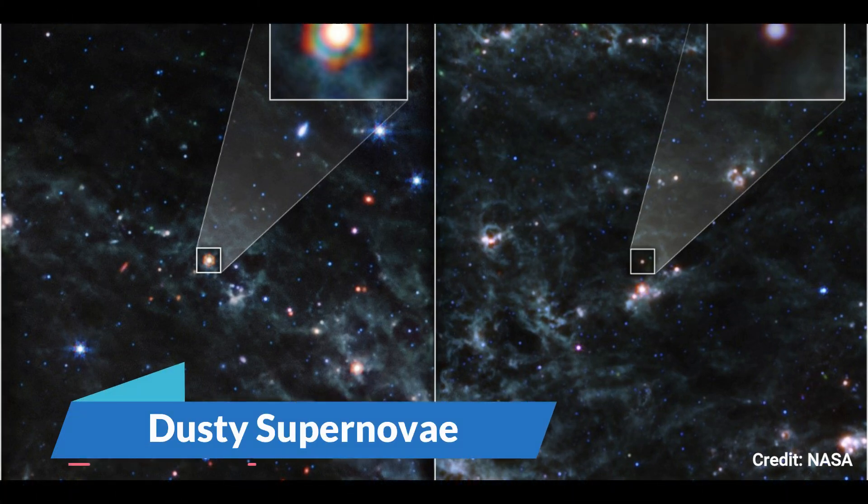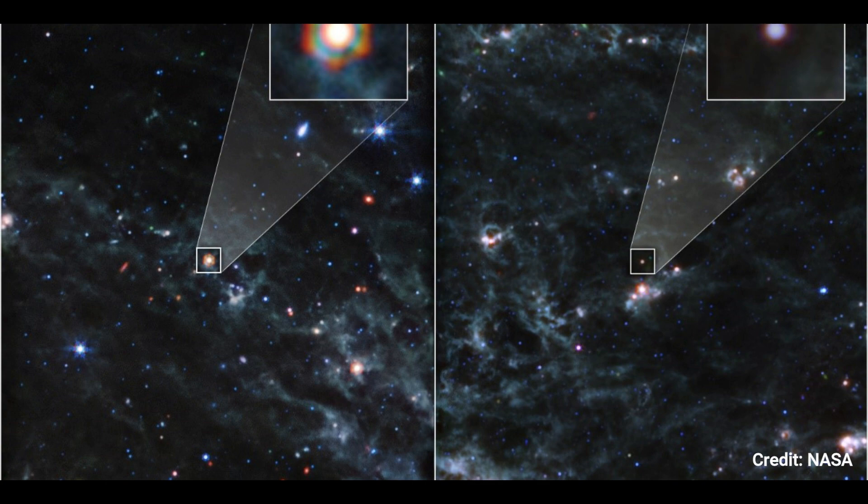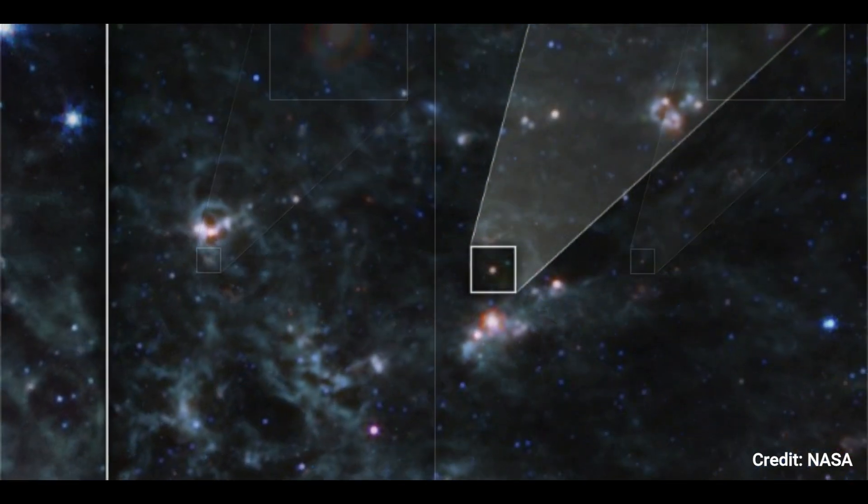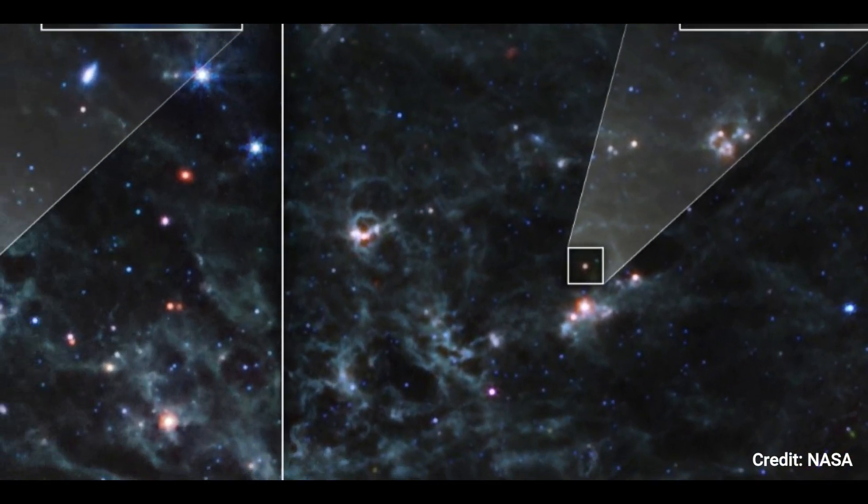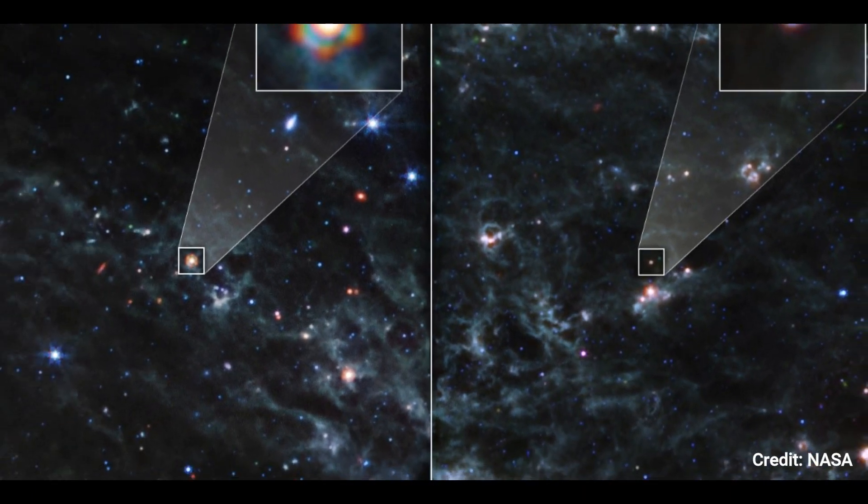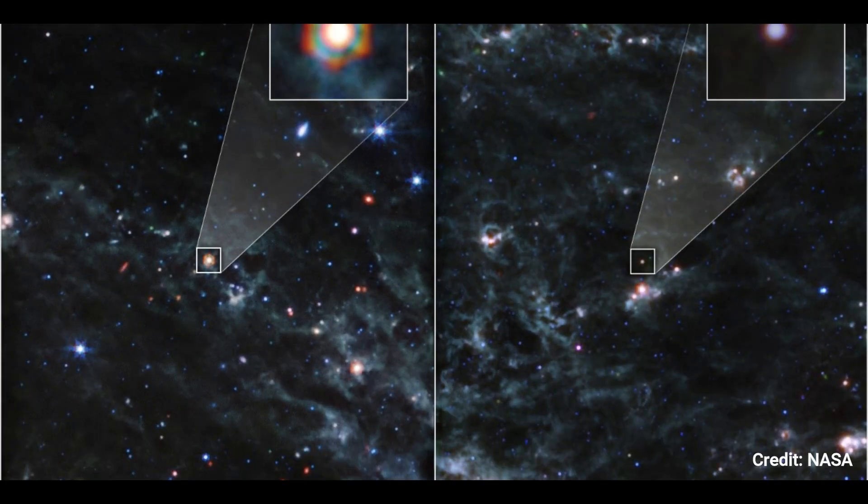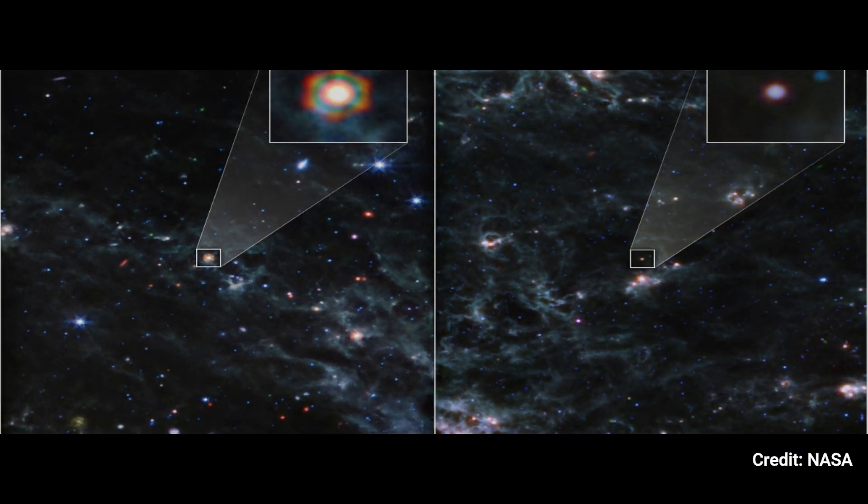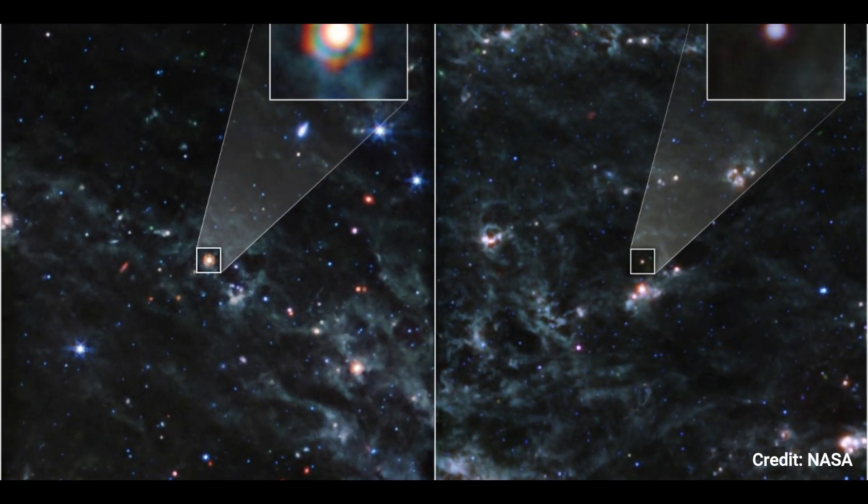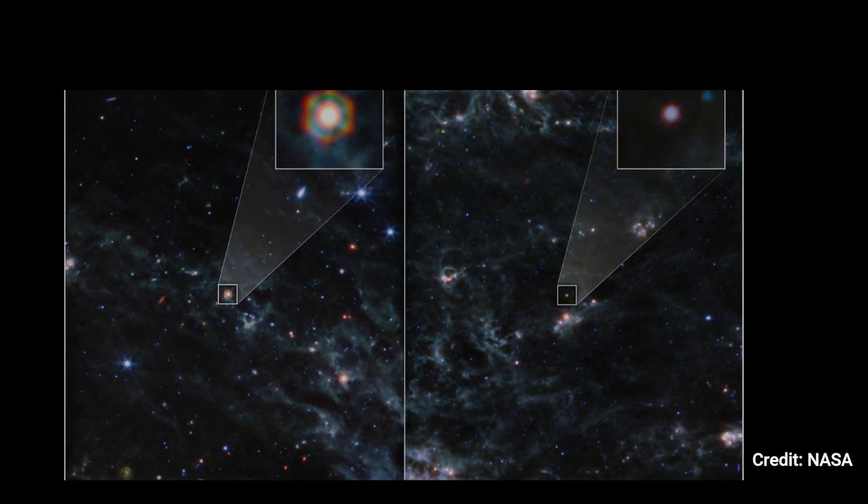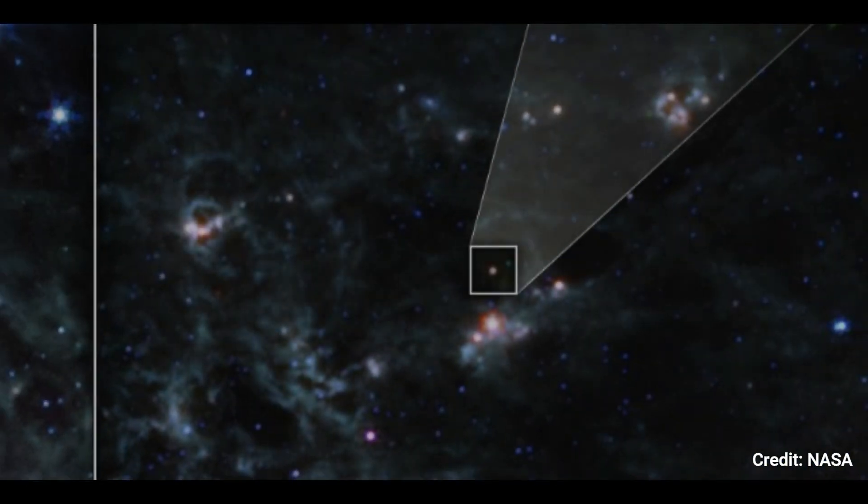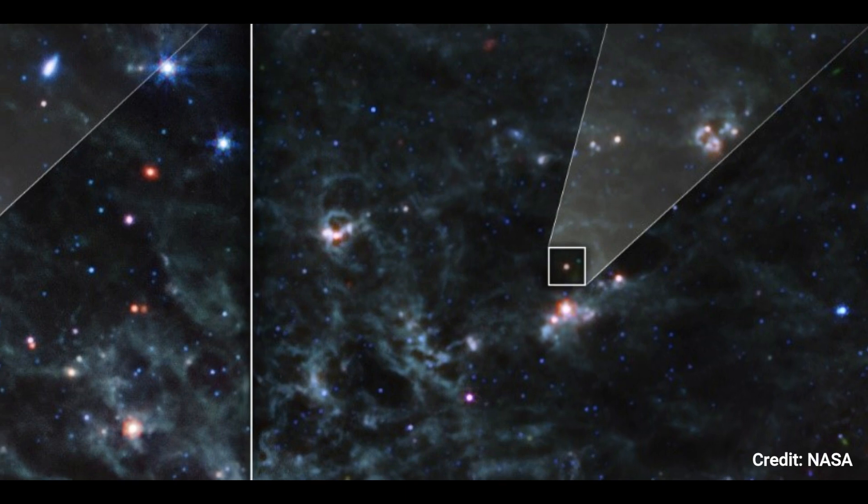Number 1. Dusty supernovae images from NASA's James Webb Space Telescope's mid-infrared instrument show massive volumes of dust within two Type II supernovae, Supernova 2004ET and Supernova 2017 EAW, located 22 million light-years away in spiral galaxy NGC 6946. The vast amounts of dust discovered in the vicinity of these supernovae support the hypothesis that supernovae played an important role in delivering dust to the early universe.